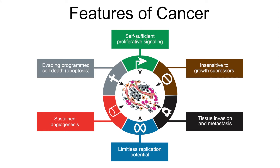The fourth is unlimited replication potential. Most cells in the body can only replicate a fixed number of times, but that's not the case for cancer cells. Cancer cells can just keep replicating forever — they're essentially immortal.